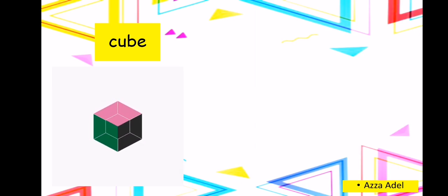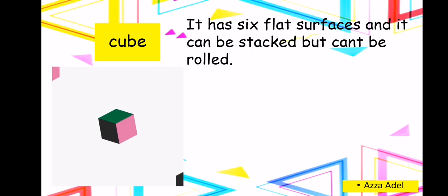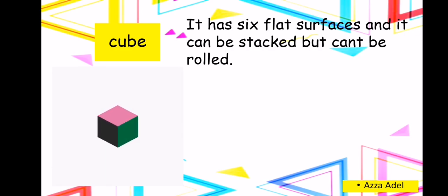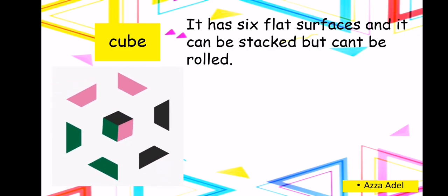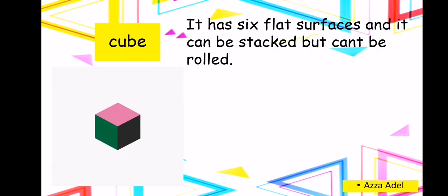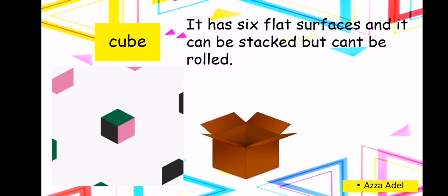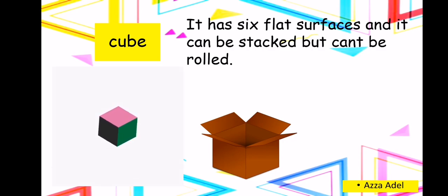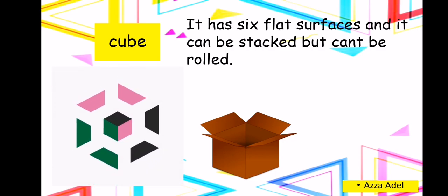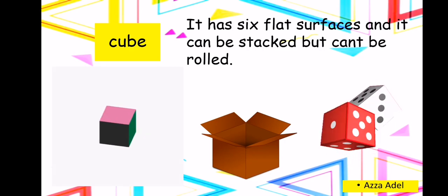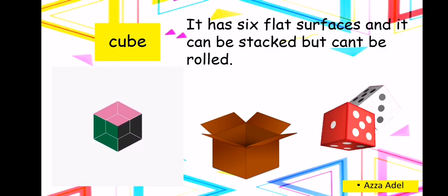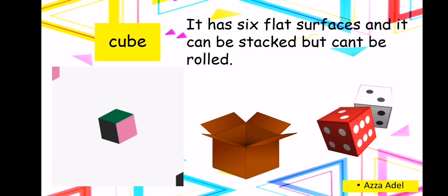Cube. A cube has six flat surfaces and it can be stacked — we can put more than one cube over each other — but we can't roll it. Such as a box: can you put your toys inside a box? Yes, because it has a space of air, that means it's a 3D shape called a cube. And a dice is also a cube. Can you think of something else that's shaped like a cube?